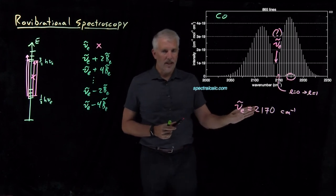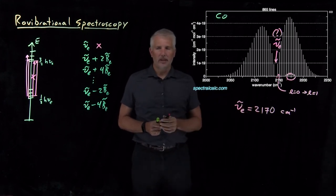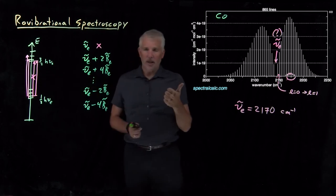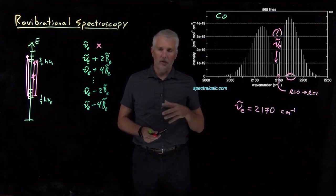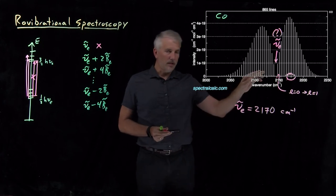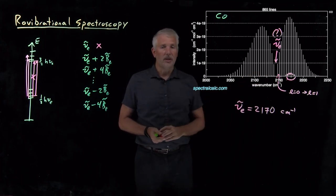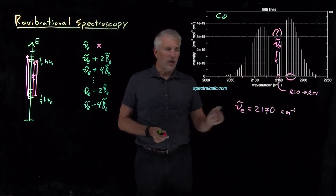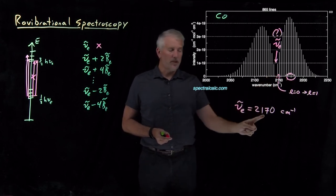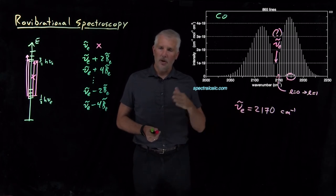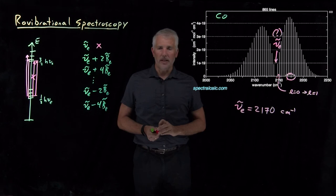To understand why that's happening, we need to recognize that our model for these energy levels, the harmonic oscillator rigid rotor model for the diatomic molecule. Real diatomic molecules are, of course, not harmonic oscillators. They're not rigid rotors. So in order to understand the really small-scale details of why the spectrum looks like it is, why we get this point at 2140-some wave numbers rather than 2170 wave numbers, we need to go a little beyond the harmonic oscillator and rigid rotor models. So we'll explore those ideas next. We'll see you next time.